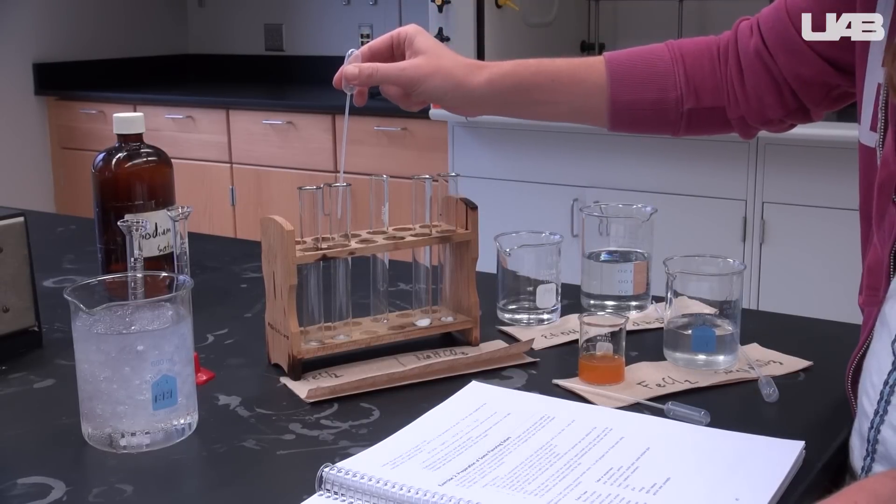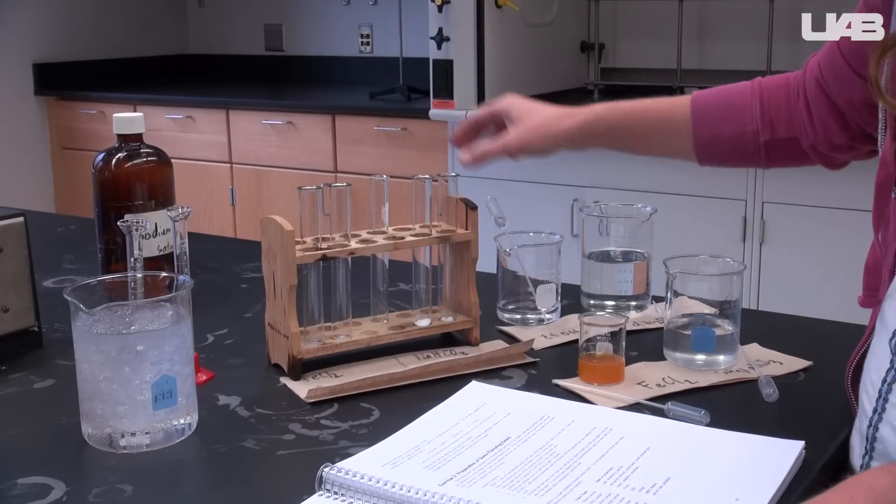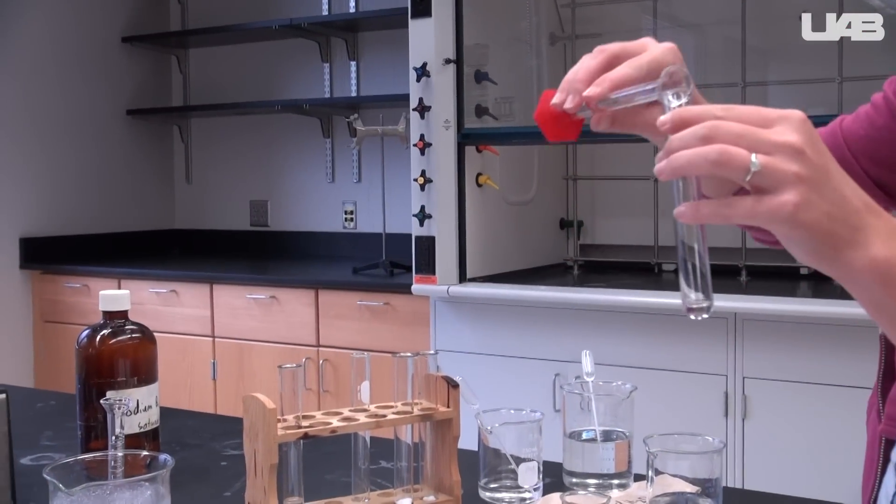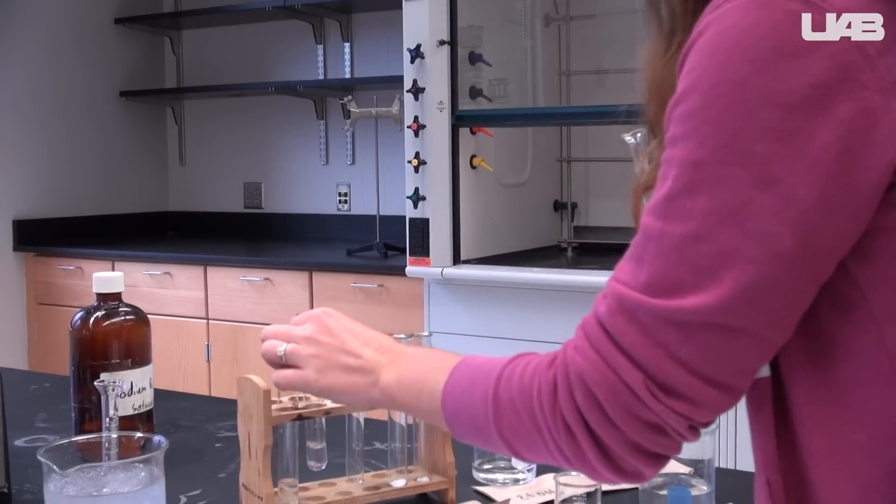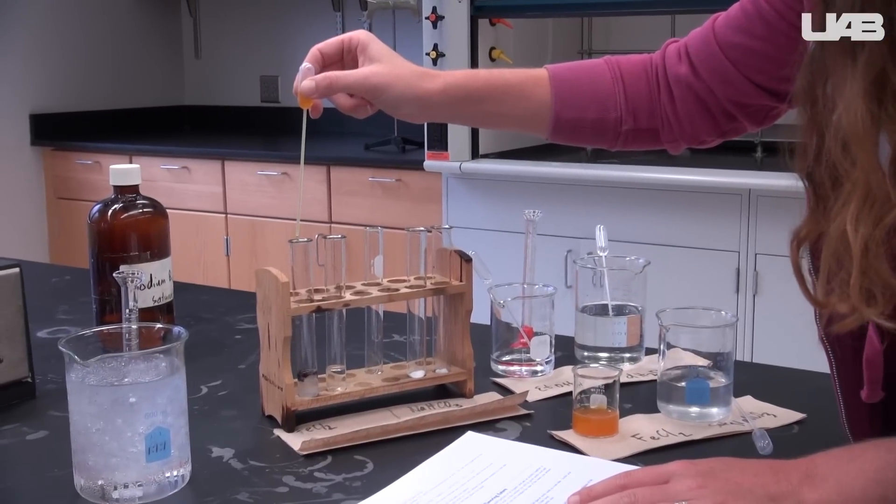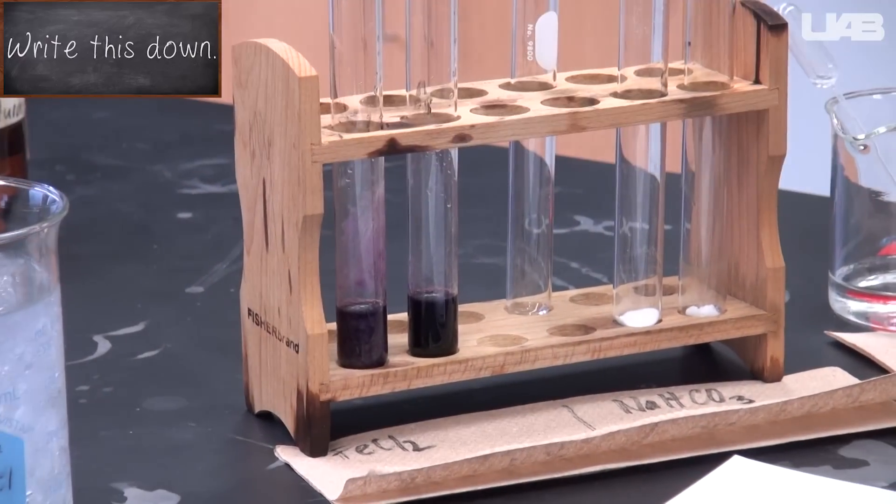To perform the ferric chloride test, use five to ten drops of ethanol to dissolve the solid in each of the test tubes. Add four milliliters of distilled water and mix the contents of each test tube. You will then add three drops of the ferric chloride solution. Compare the aspirin you made to the stock aspirin.